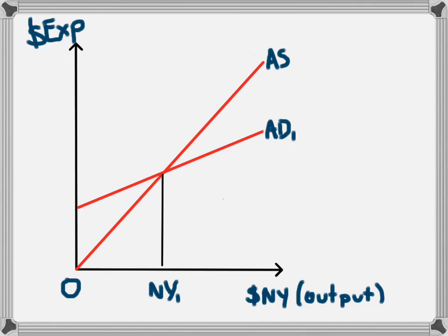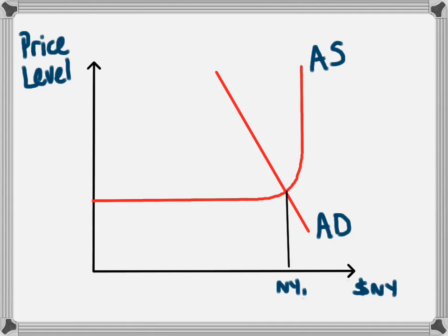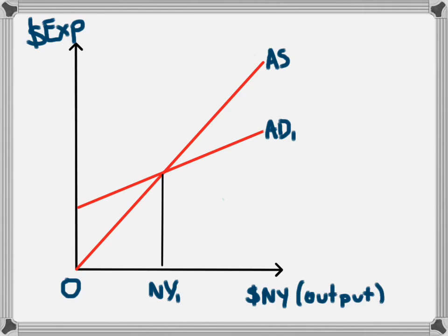For example when we use this model we're able to have a look at the effect of inflation. We can look at an increase in price level as a result of an increase in aggregate demand and we cannot show this on this model because it doesn't have price on one of the axes.